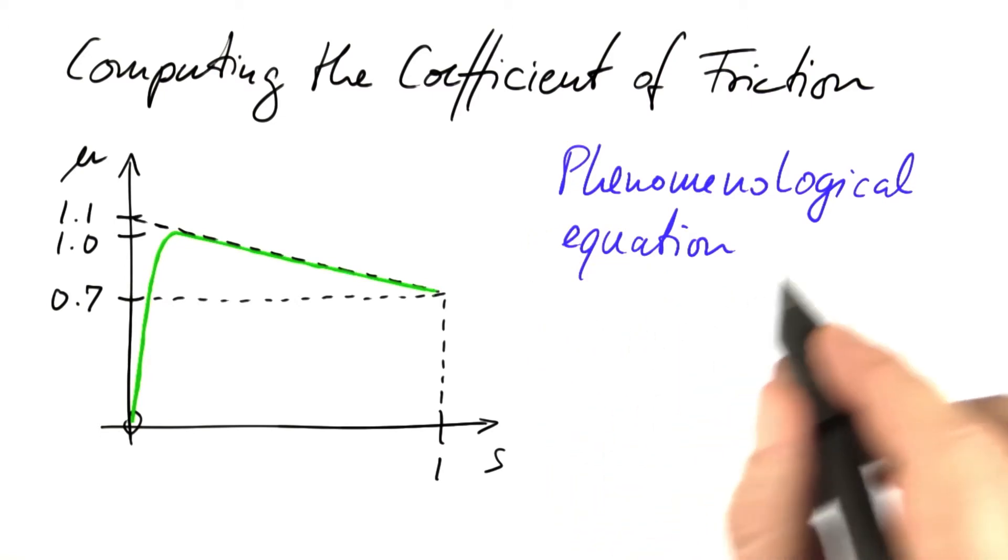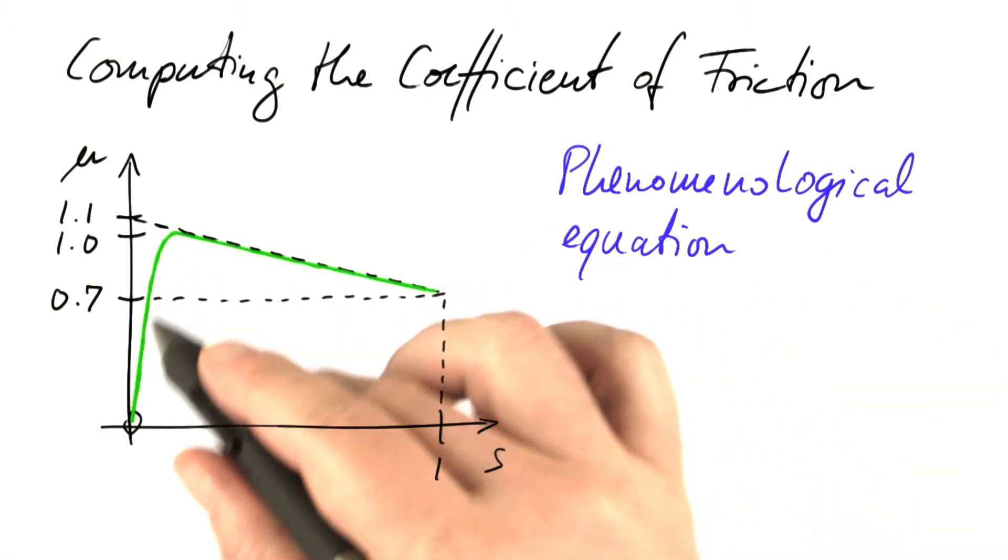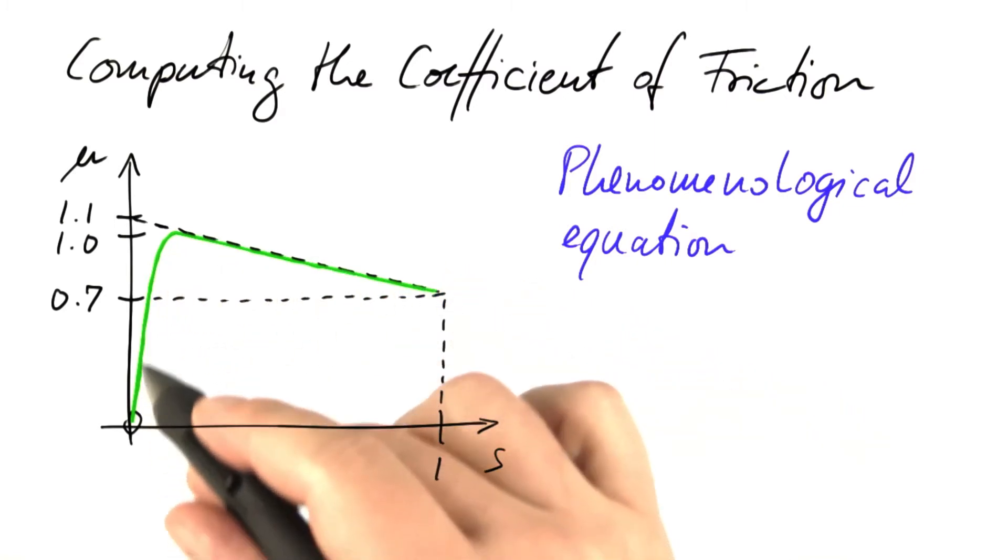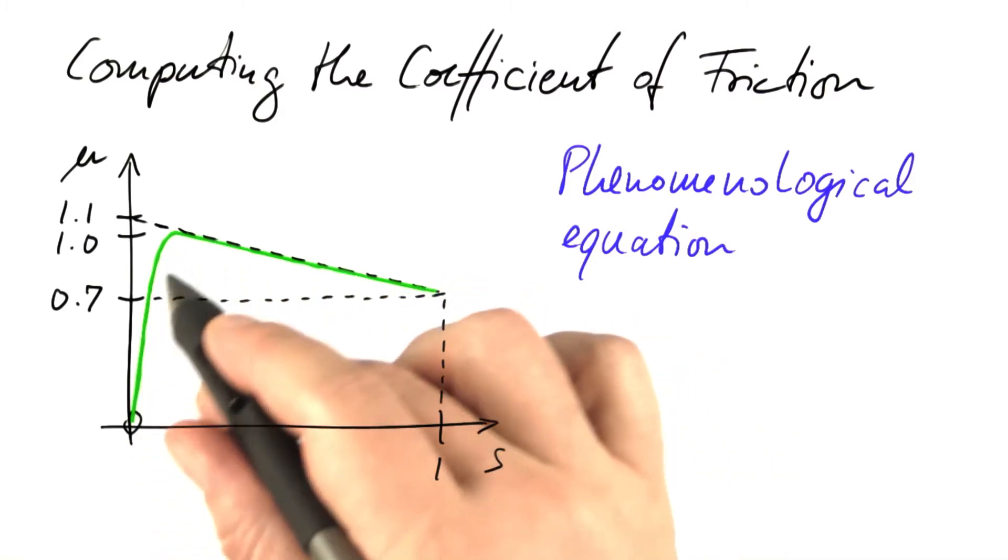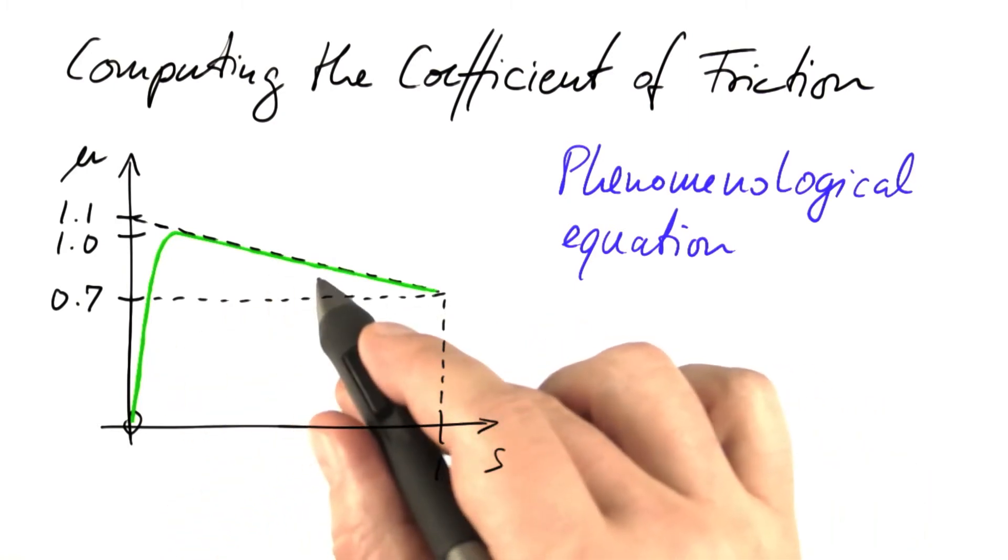A simpler approach is to use a phenomenological equation to guess how one could possibly describe this in mathematics without worrying about the reasons for why it looks the way it looks. We just collect some mathematical functions that produce the right shape.